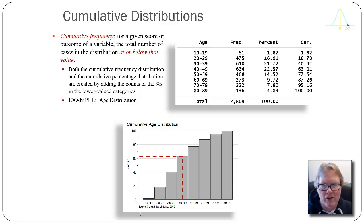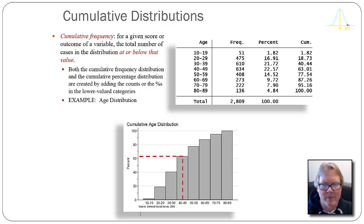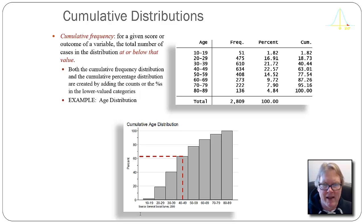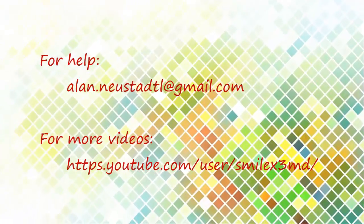That's it for our discussion of how to examine frequency distributions when you have continuous data and collapsing your variables. We have example videos of how to do these kinds of problems, and another video on how to make graphics — histograms, bar graphs, or cumulative distributions — from your own data. If you have any questions, feel free to contact me and I will do my best to answer them.